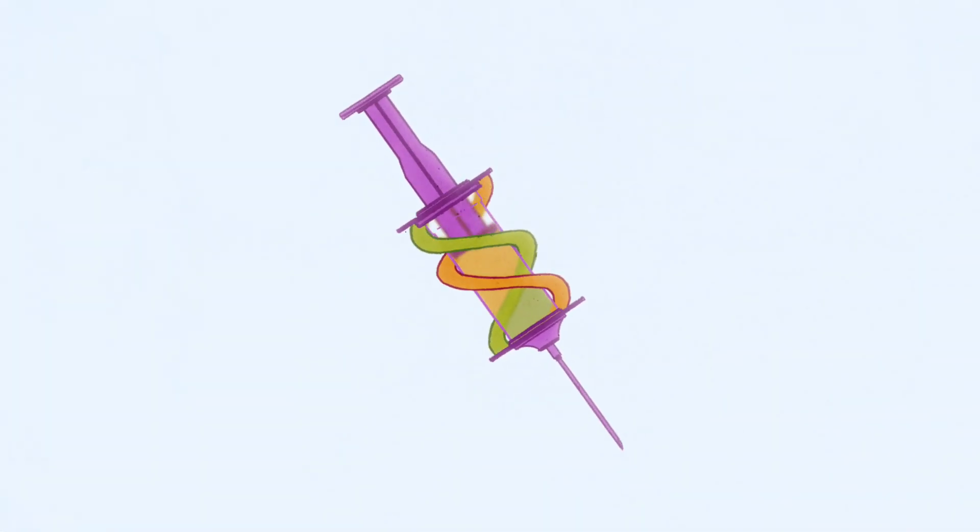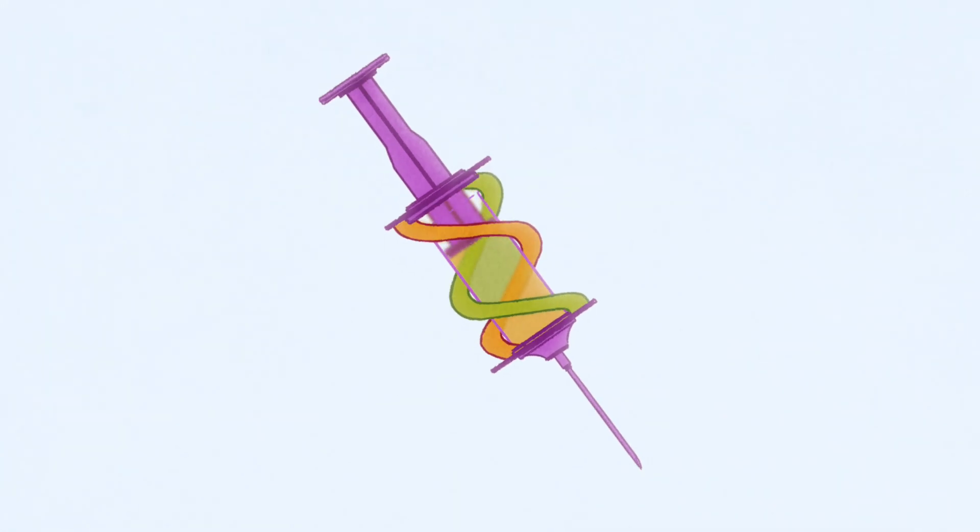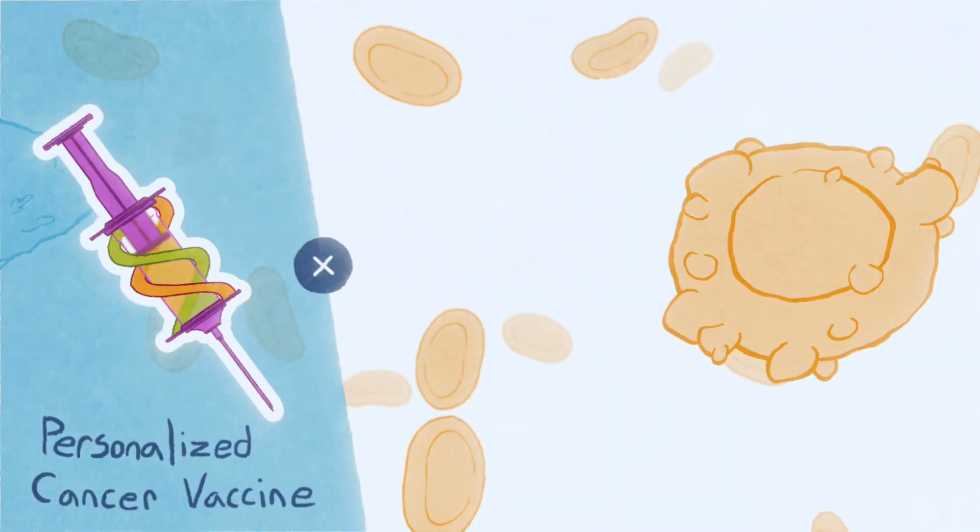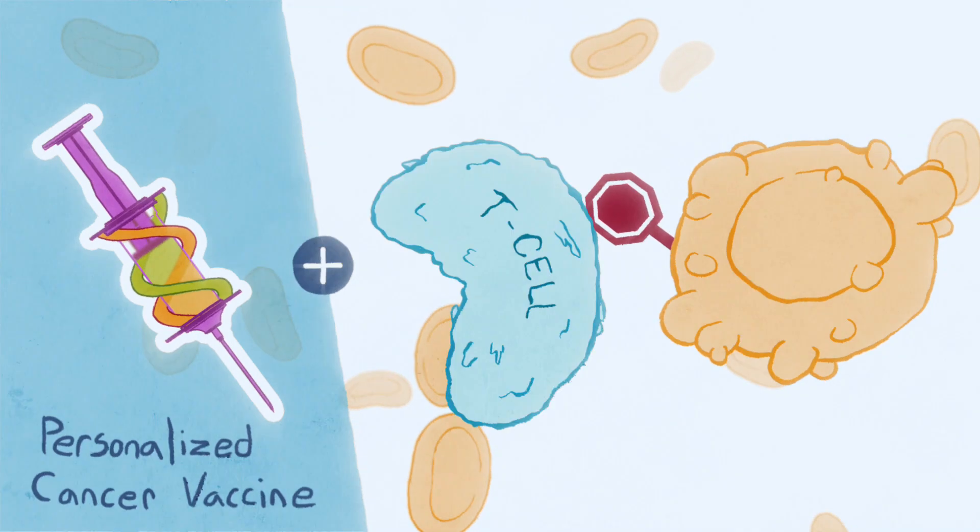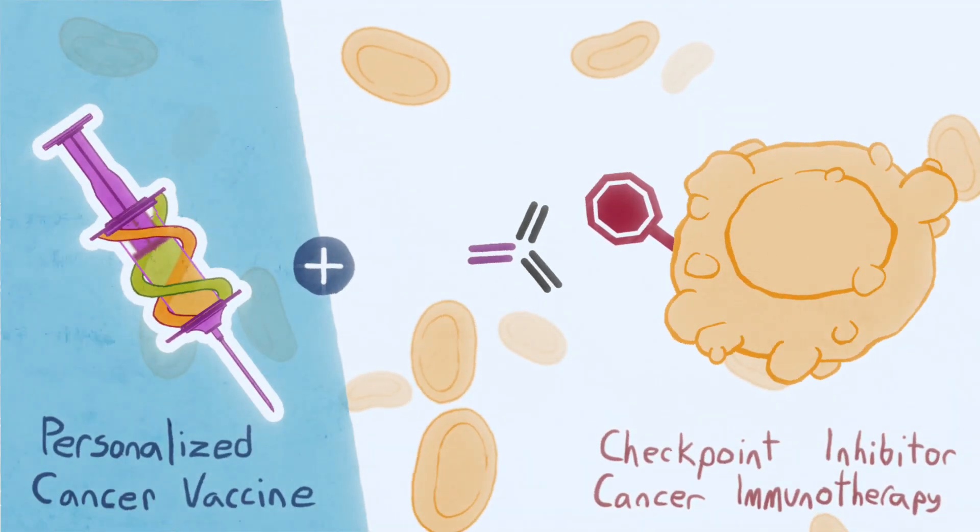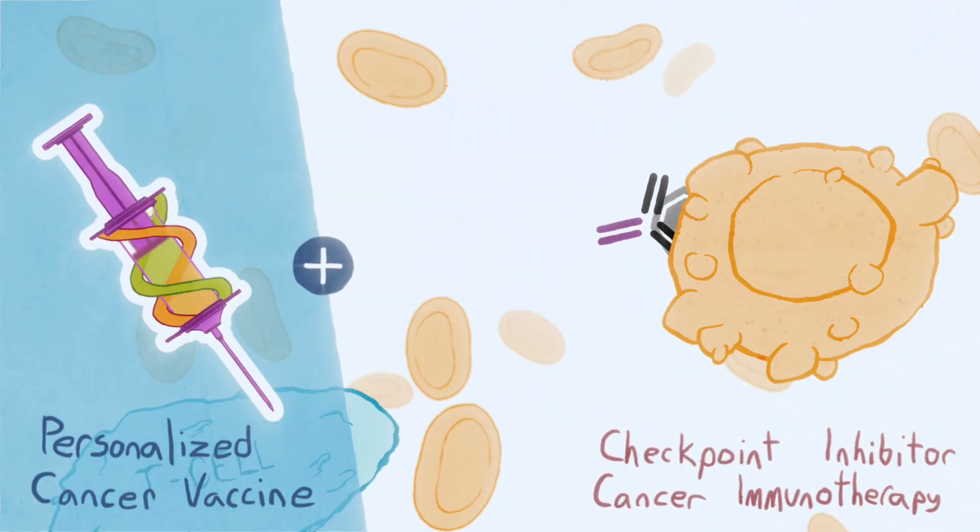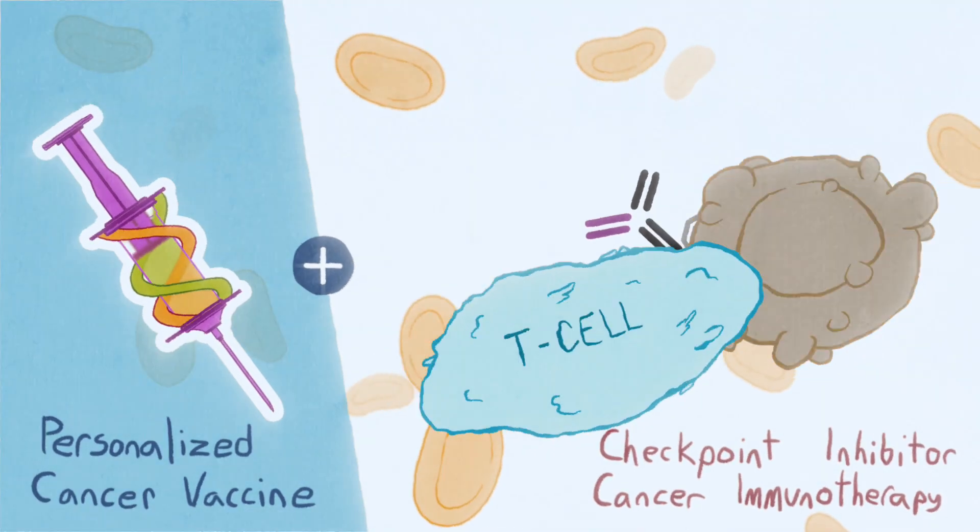Ultimately, the full potential of personalized cancer vaccines may come from using them in combination with other immunotherapy approaches, like checkpoint inhibitors, which are thought to work by blocking signals from the tumor environment that can inactivate the immune system.